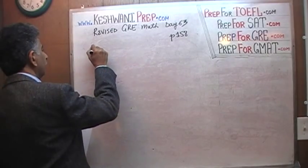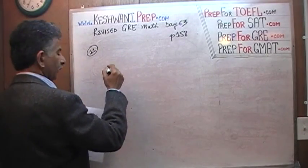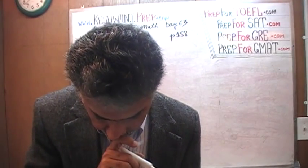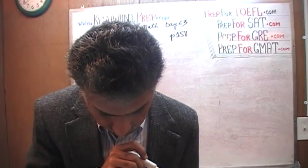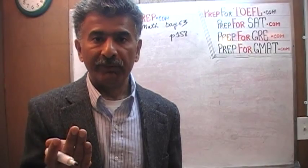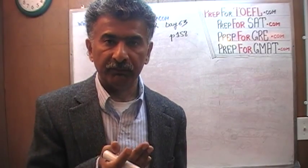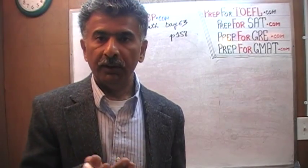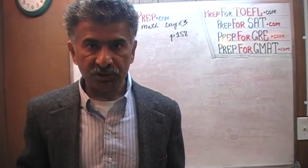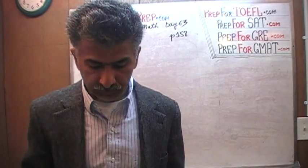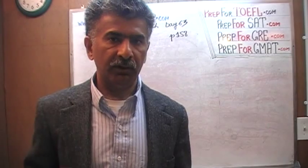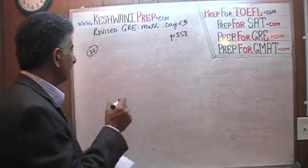Problem 11. We are told that the relationship between the area of the circle and the circumference is given by a formula which represents the relationship between the area of a circle and the circumference of a circle. Before we worry about what the relationship is between the two, let's first ask ourselves what is the area of a circle and what is the circumference of a circle.